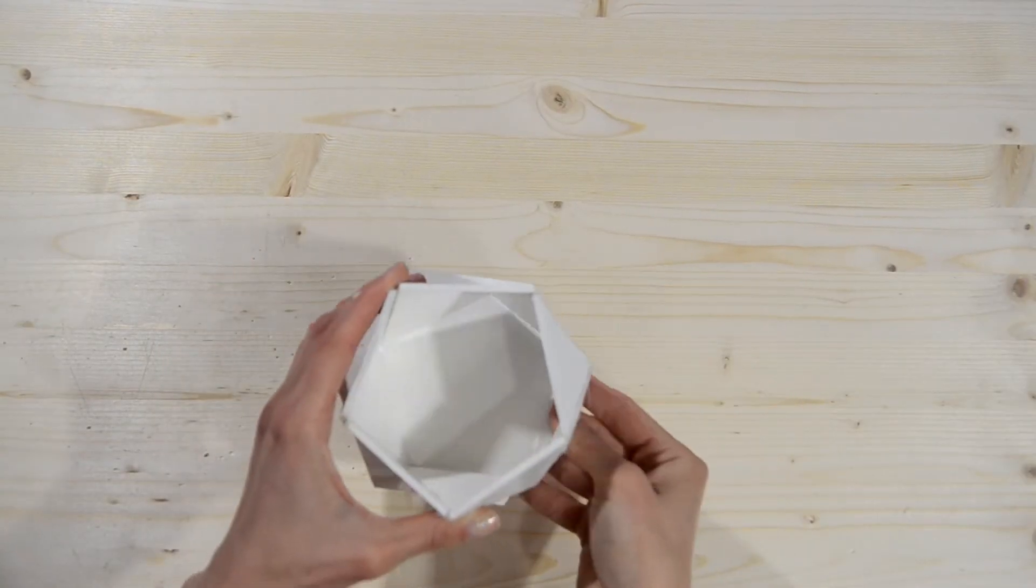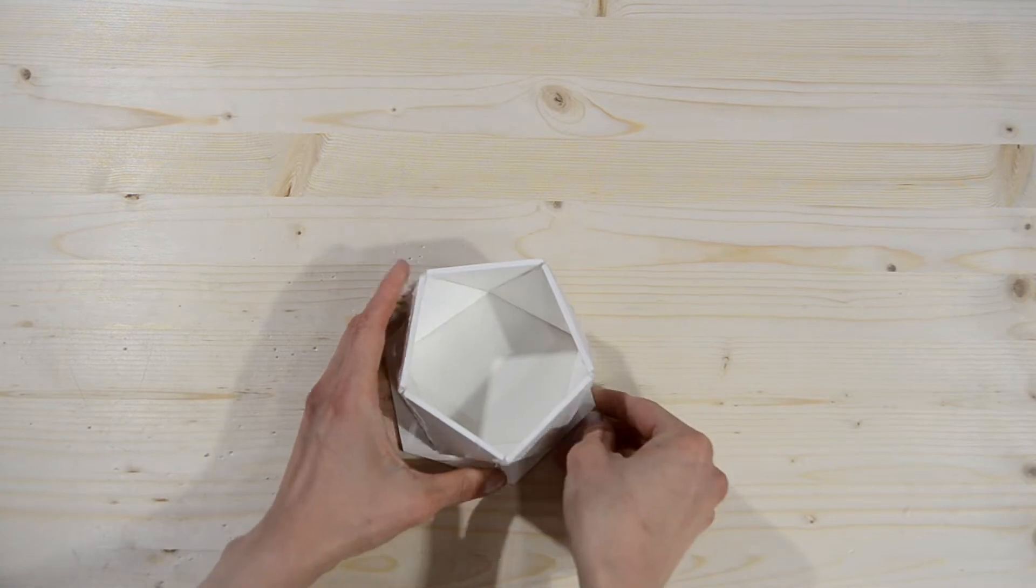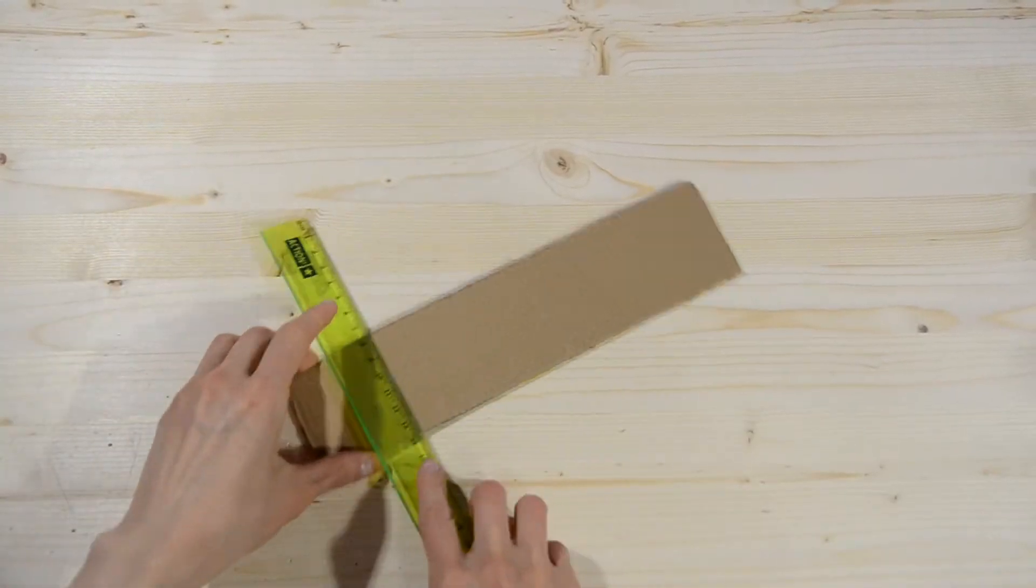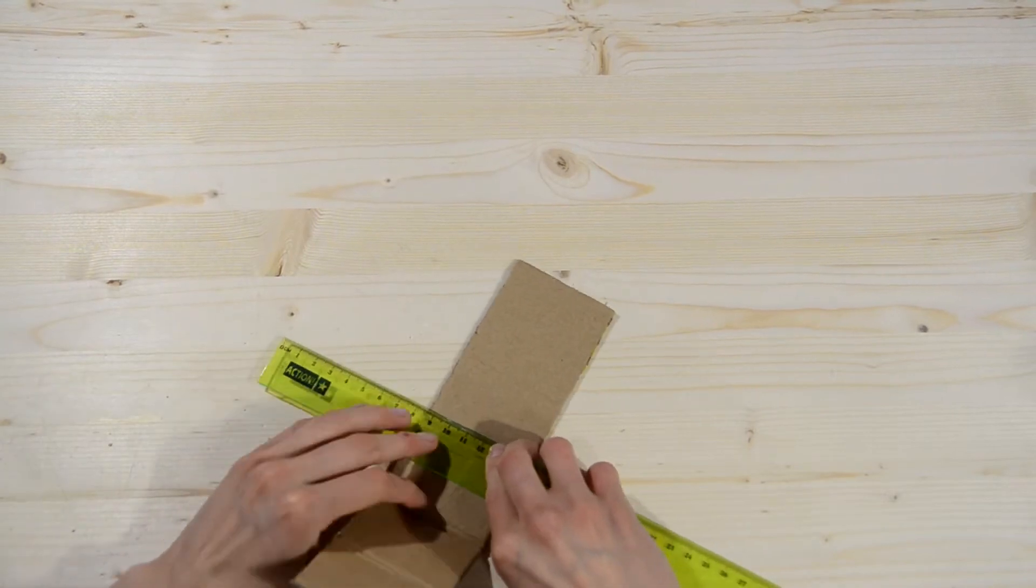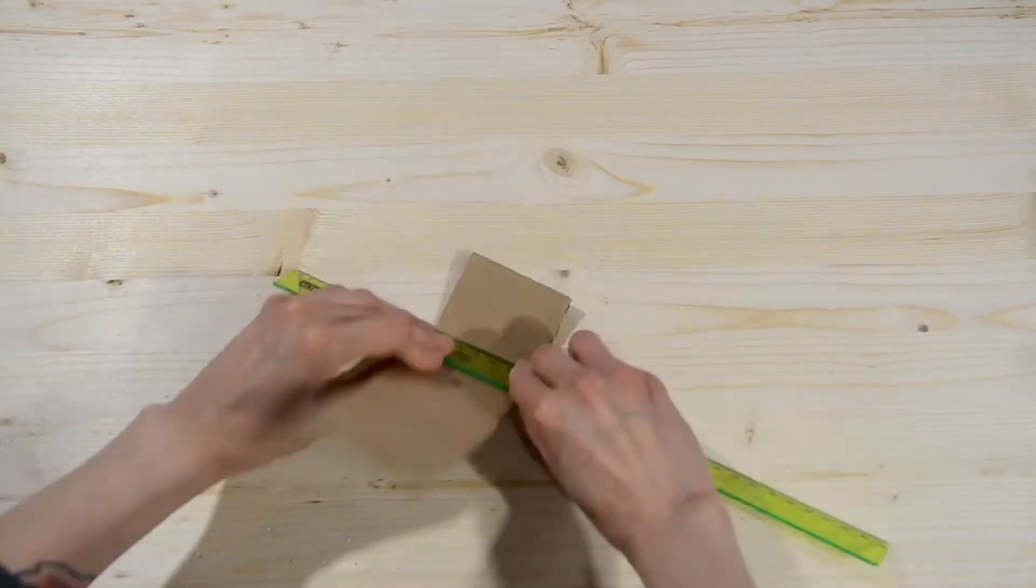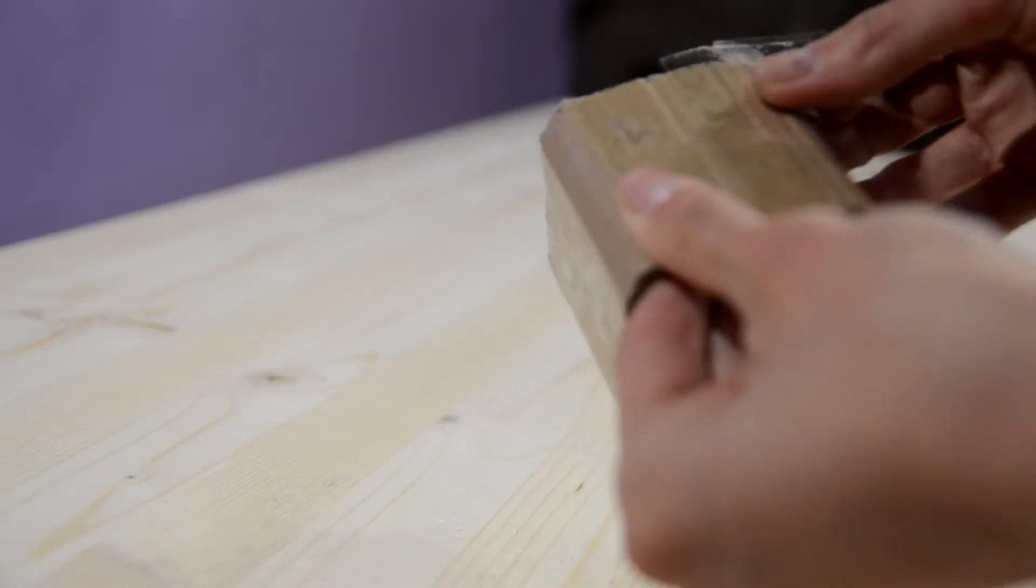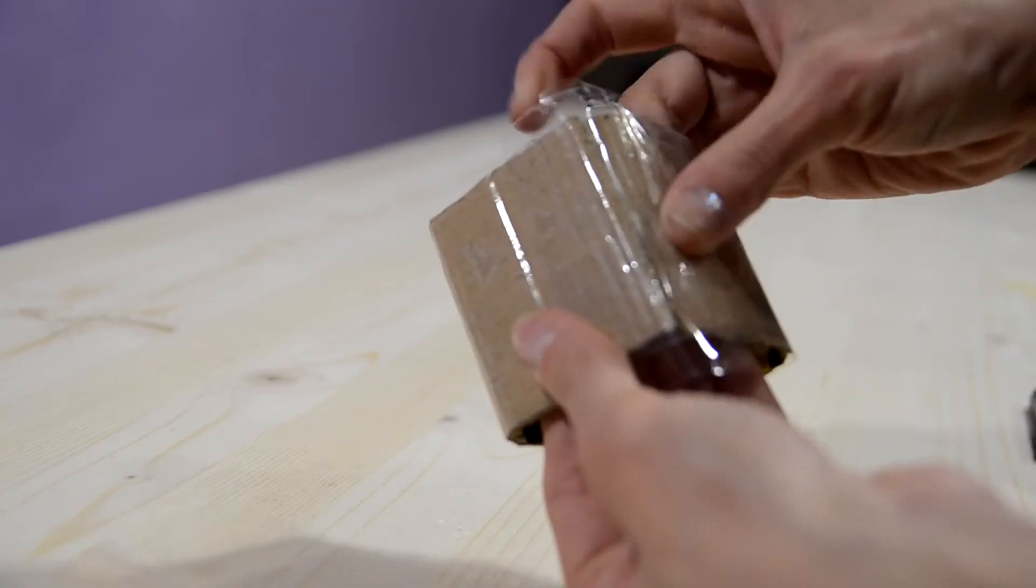Don't forget about the bottom. You can also make a bushing from carton for the future drainage opening in the pot. Wrap it in duct tape to prevent it from soaking, and it'll make the process of getting it out much easier.